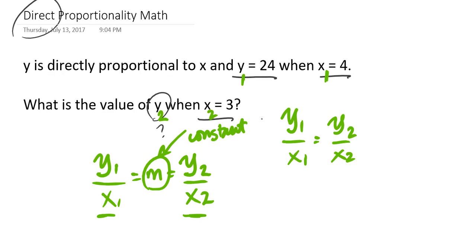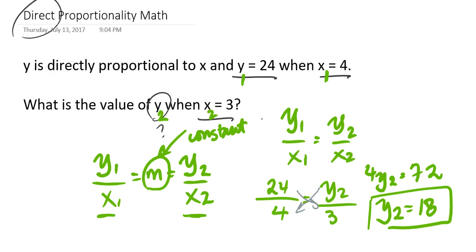Now, it's all just a matter of substituting in. So, y1 is 24, x1 is 4, y2 is what I'm trying to find, and x2 is 3. So, to solve this, basically I would have to cross multiply through the equal sign, and that would give me 4 times y2 is equal to 72. If I divide this out, then y2 should be 18. So, that means that when x is 3, then y should be 18.